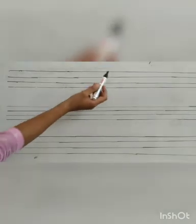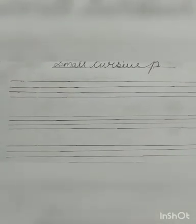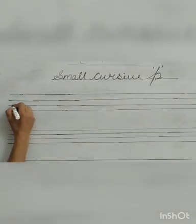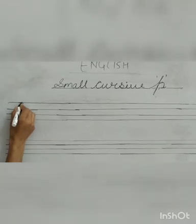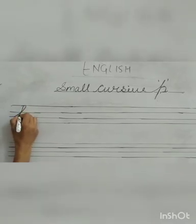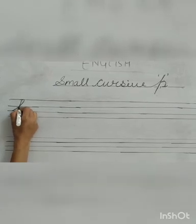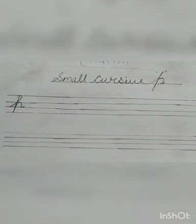So I am going to tell you how to write small cursive P. Look at the board. When we write small cursive P, we start with a third line and a slanting line like this. You will make it like this.